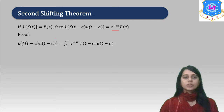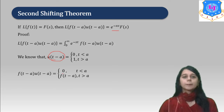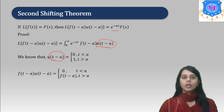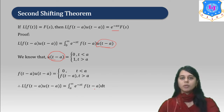Taking the definition of the Laplace transform, Laplace of f(t minus a) times u(t minus a) equals the integral from 0 to infinity of e raised to minus st times f(t minus a) times u(t minus a) dt. As per the definition of the Unit Step function, u(t minus a) is 0 when t is less than a and 1 when t is greater than a. So the integral reduces to the integral from a to infinity of e raised to minus st times f(t minus a) dt.